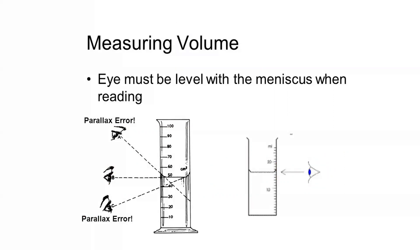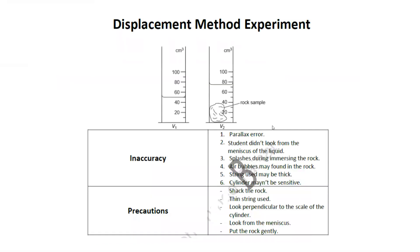In the displacement method, there are certain inaccuracies. First, parallax error — the student did not look perpendicular to the meniscus of the liquid. Second, splashing during submersion of the rock — when you put the rock in, some water may come out, leading to error. Third, air bubbles may be trapped in the rock, meaning the measured volume would be rock volume plus the volume of trapped air.